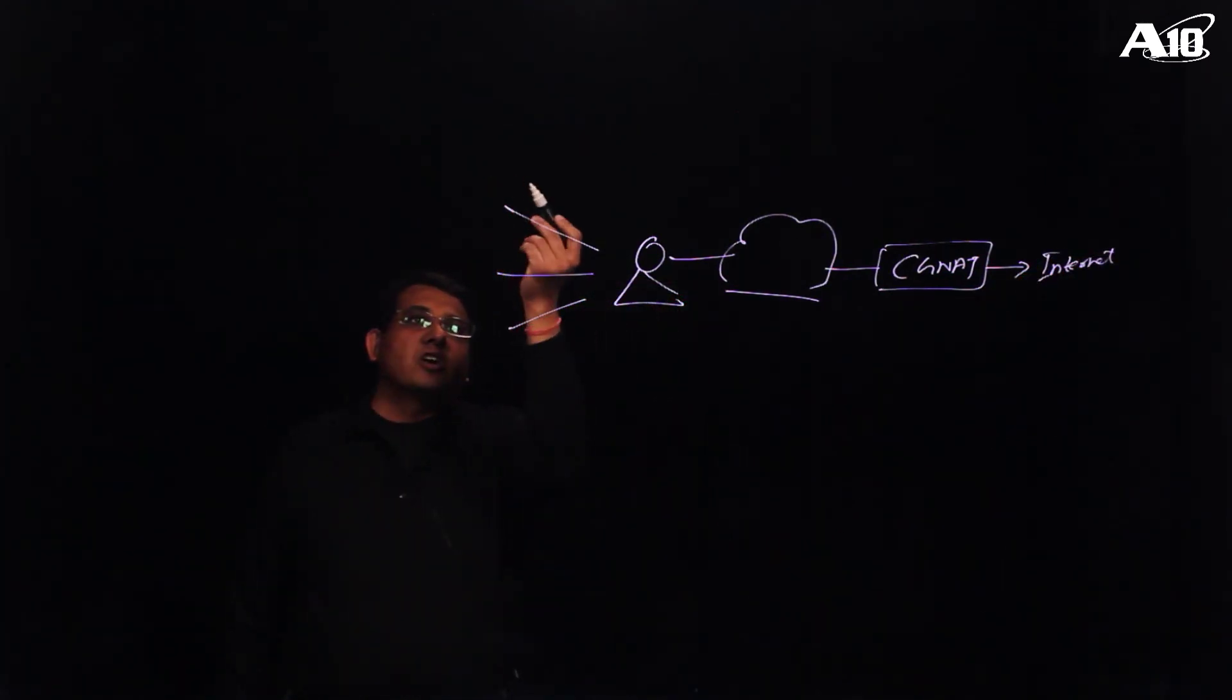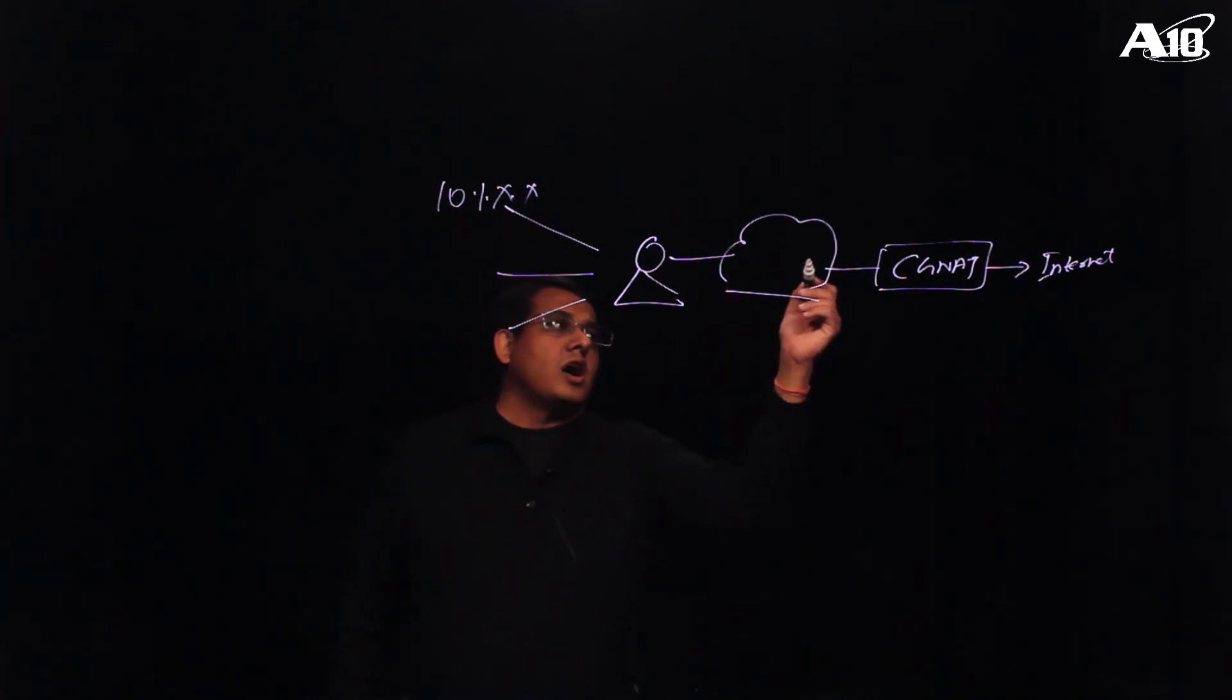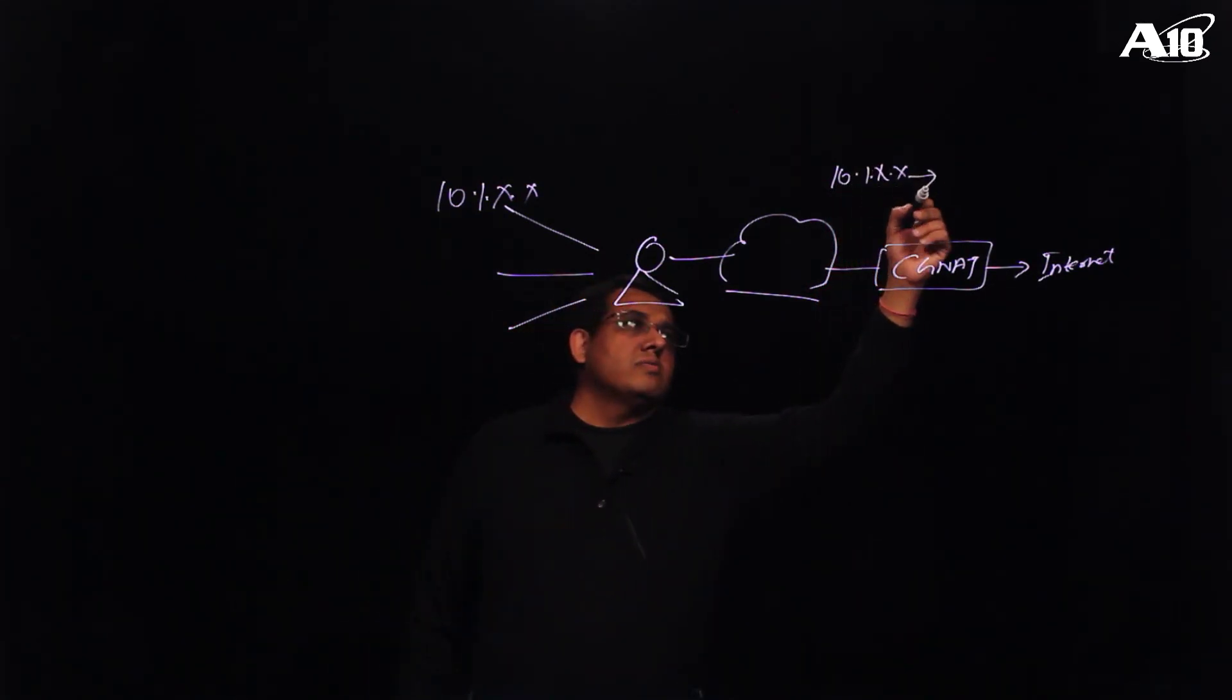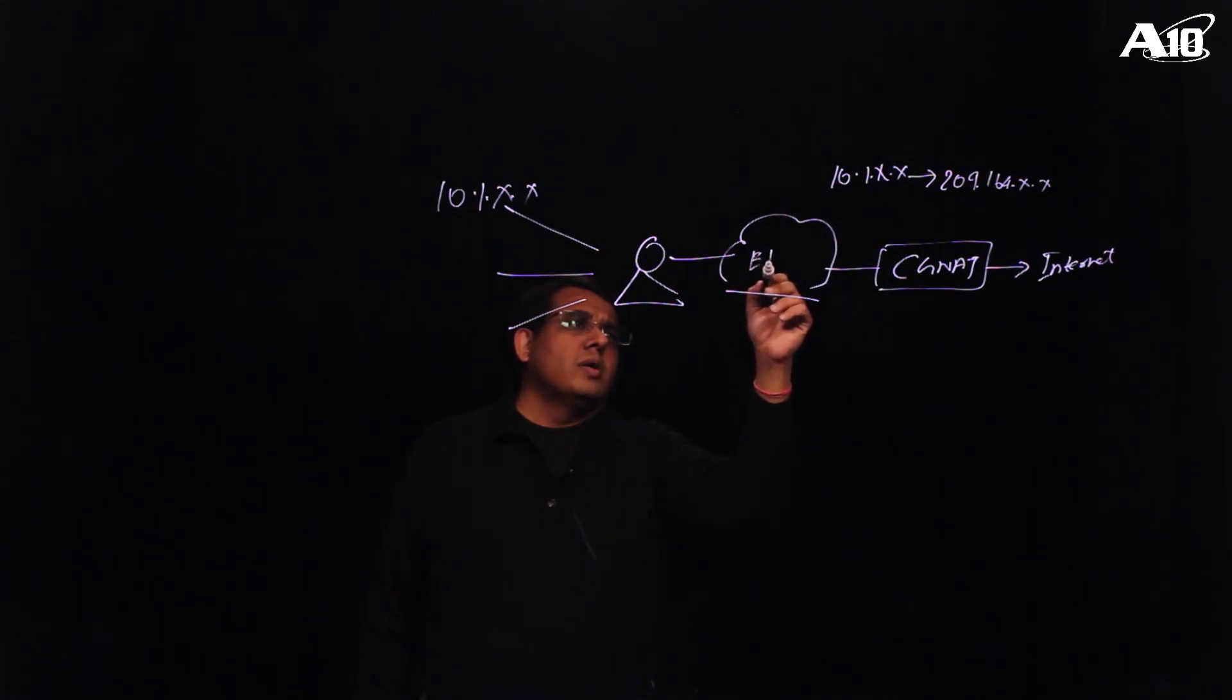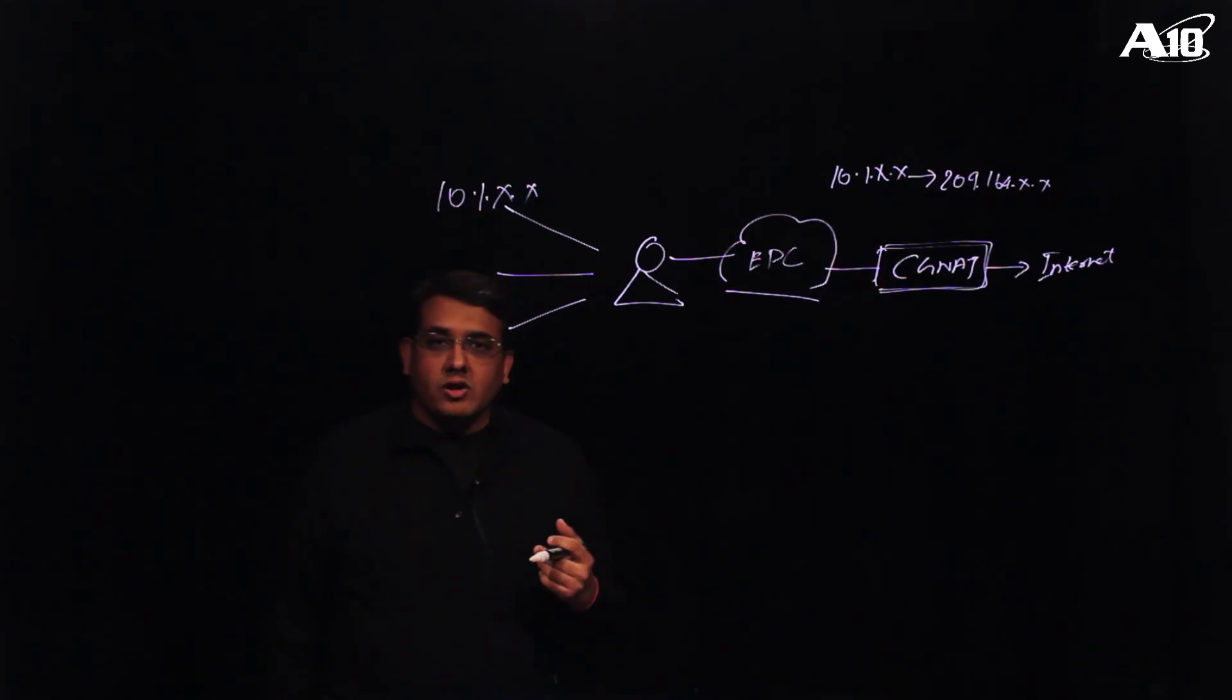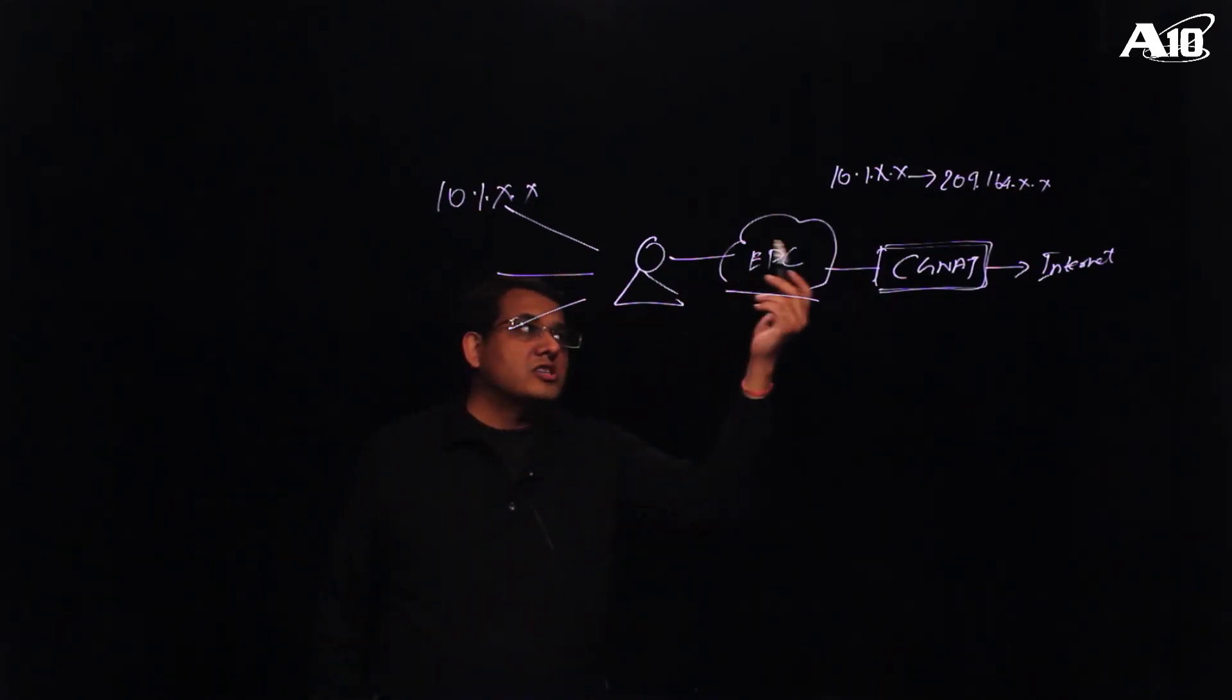So these clients, which are your mobile subscribers, may be assigned an IP address like say 10.1.1.x, and your public IP addresses are very limited in number. So how do you solve this problem? Well, you map them from 10.1.x.x to a public IP which could be like 209.164.x.x and send them out towards the internet, and this could be your evolved packet core. So CGNAT helps you to deal with this problem of IPv4 address depletion and mapping a large number of subscribers to a limited public IPv4 address space.